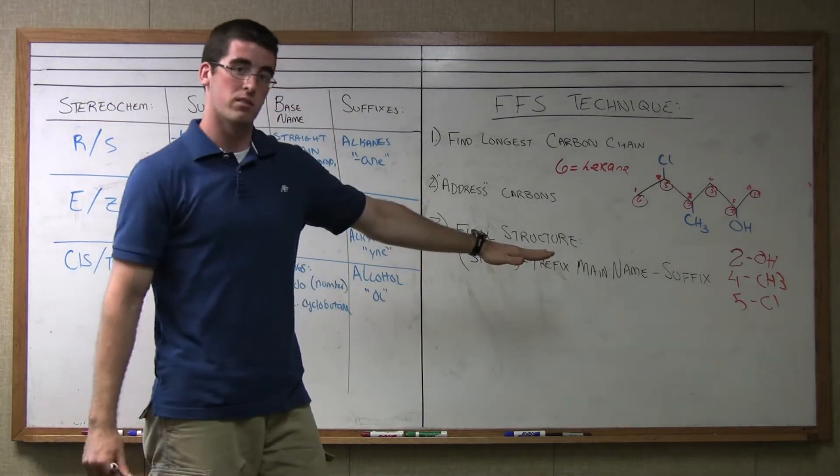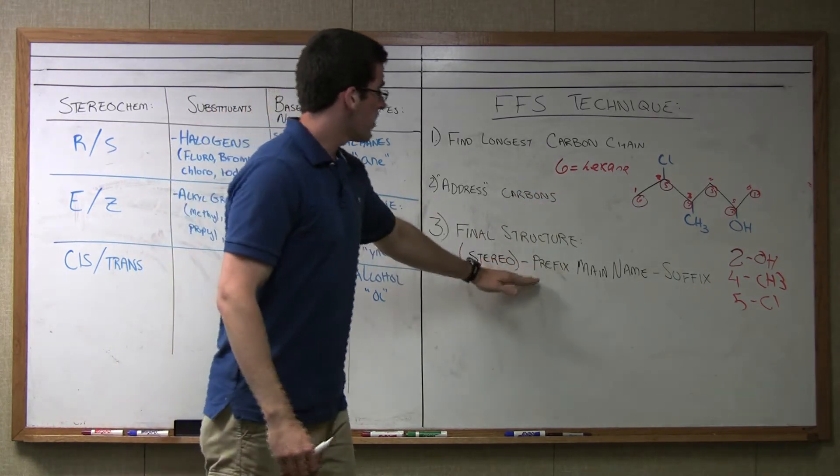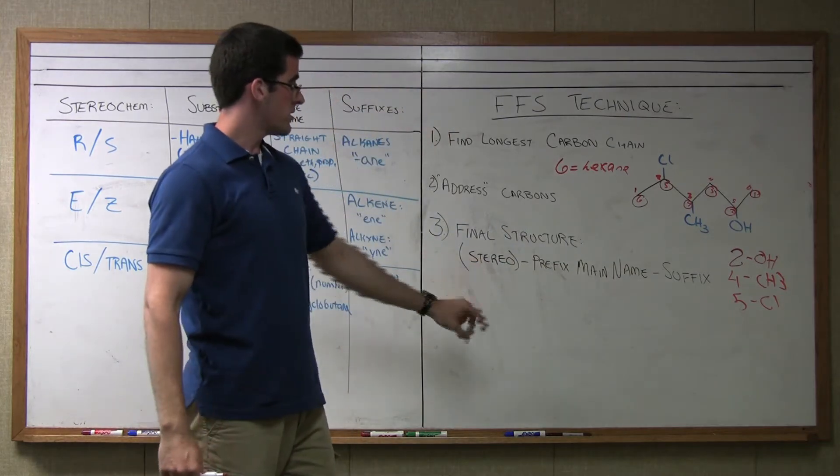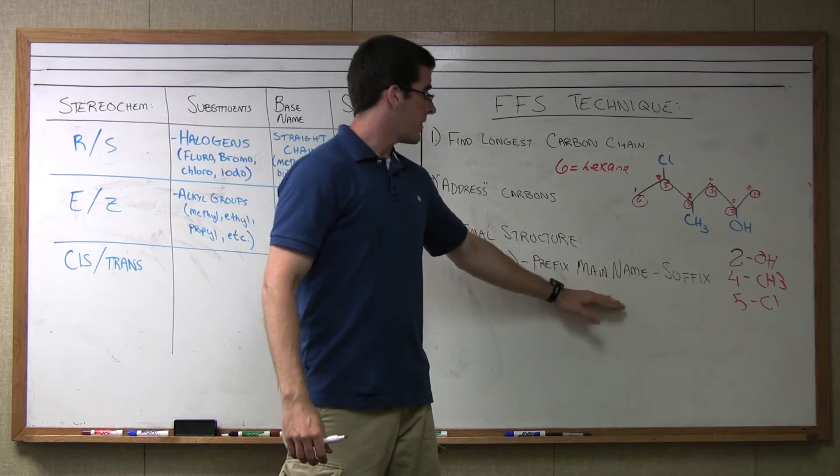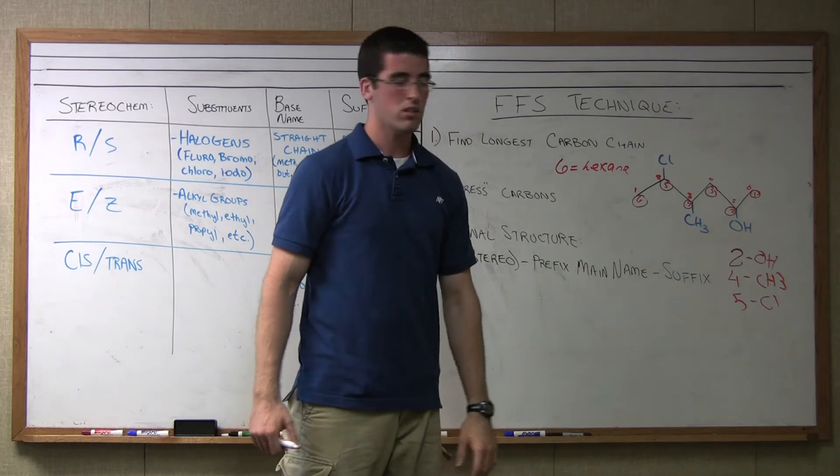I break it up as the same. We have stereo, which was referenced in the last lecture. And there is no stereo here right now. Then we go into our prefixes, our main name, and our suffixes. So like I said, we have two substituents that become prefixes, the methyl and the chlorine. Then we have our main name, which we established as hexane, and our suffix, which is altered by having the alcohol.